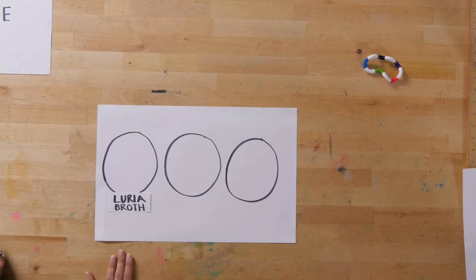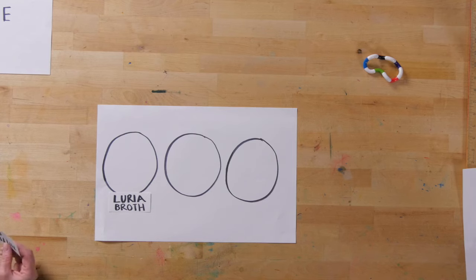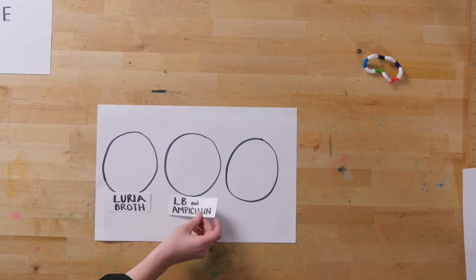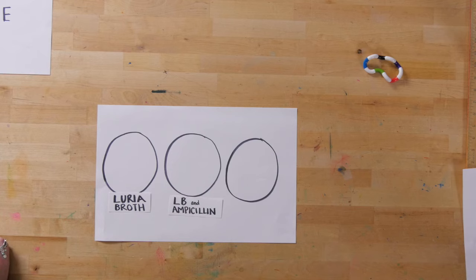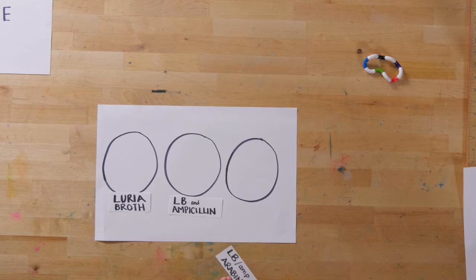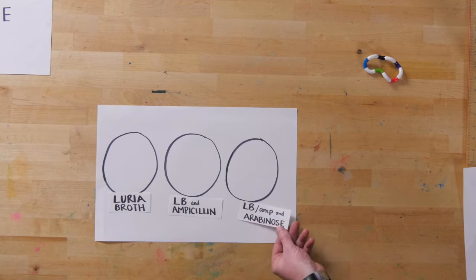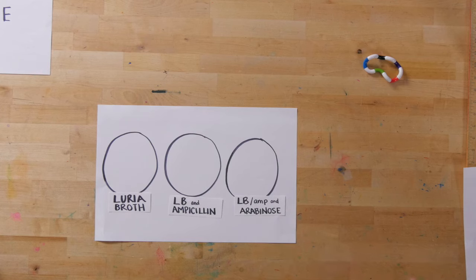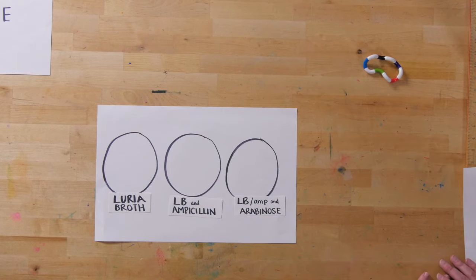The first plate has only food and things they like. The second one is LB or Luria broth plus ampicillin, which is where we actually add the antibiotic into the plate to select for the bacteria that we want. The third one has the LB plus the ampicillin plus arabinose, something that will help us kick start growing that red fluorescent protein.